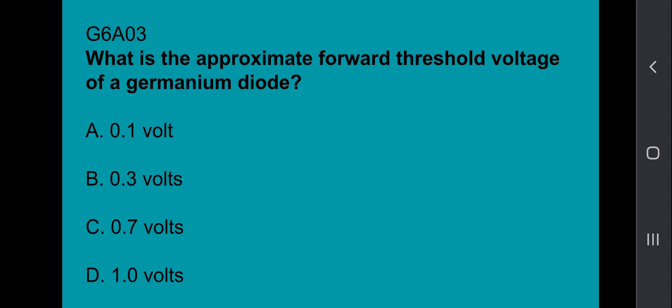G6A03: What is the approximate forward threshold voltage of a germanium diode? It's going to be 0.3 volts.